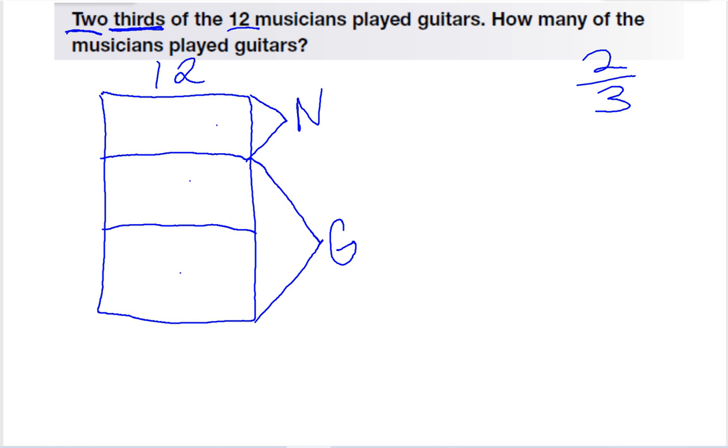The last step is I need to figure out how many musicians go in each box. And to do that, I'm going to take the twelve and divide it into three equal pieces. Well, twelve divided by three is four. So I would have four musicians in each of these boxes. And we can always double-check by counting. Four, eight, twelve. That equals the total number of musicians.